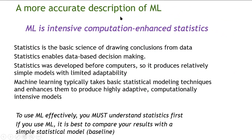A more accurate description of machine learning would be: machine learning is intensive, computation-enhanced statistics. Statistics is the basic science of drawing conclusions from data, and it enables data-based decision making. A famous example was identifying a well that caused cholera in London by taking statistical data points of cholera cases. So statistics enables the transformation of data into decisions.